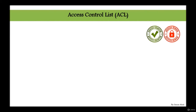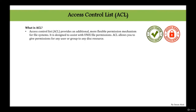Since we are on the topic of assigning permissions to files and directories, and changing groups and ownership, we have to look into Access Control List as well. Access Control List is an additional layer that runs on top of your permissions. ACL stands for Access Control List, which provides a more flexible permission mechanism for file systems. It is designed to assist with UNIX file permissions and allows you to give permission for any user or group to any disk resource.